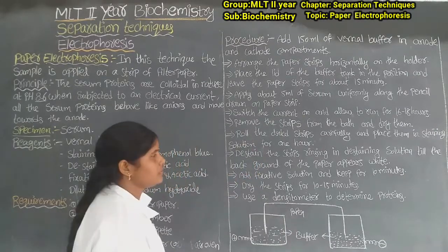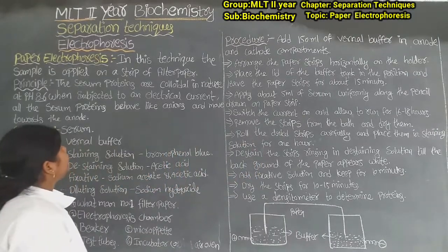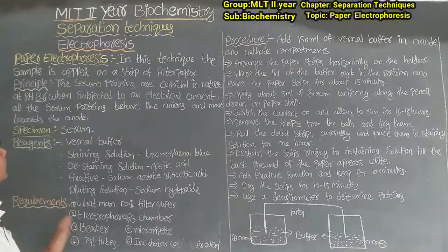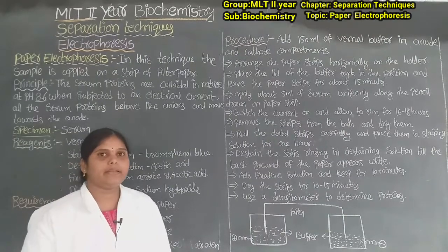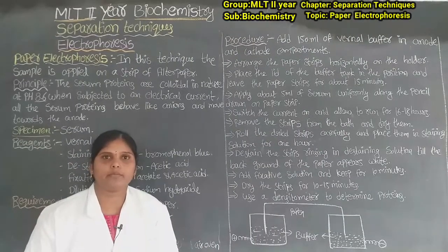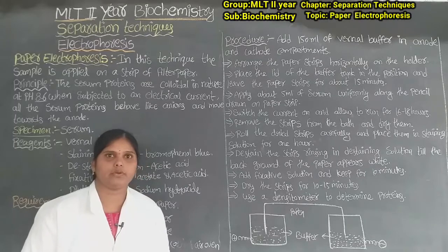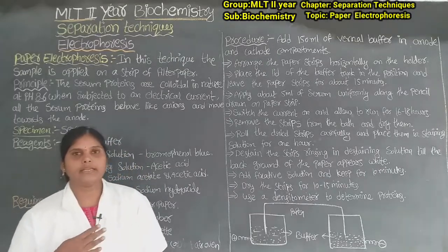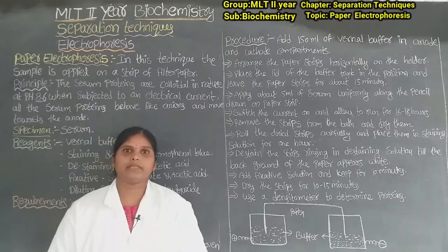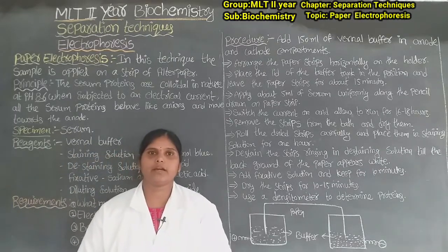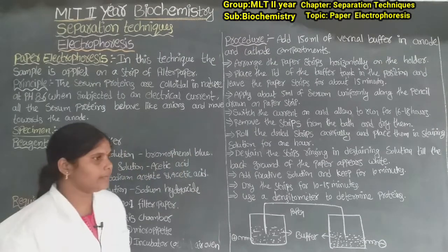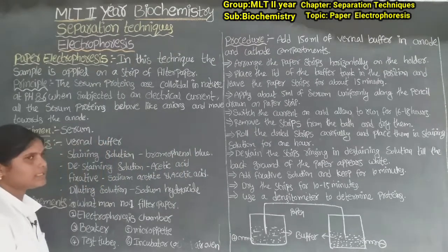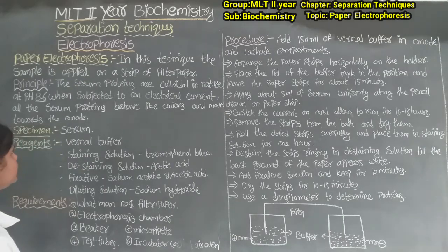Paper electrophoresis. In this technique, the sample is applied on a strip of filter paper. We apply the sample on the paper. The paper used is Whatman No. 1 filter paper. We use Whatman No. 1 filter paper for paper electrophoresis.